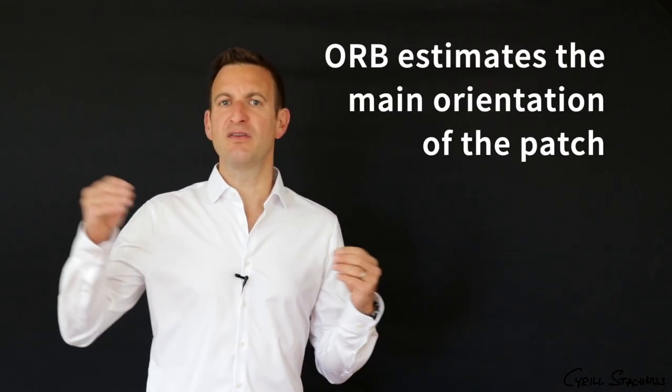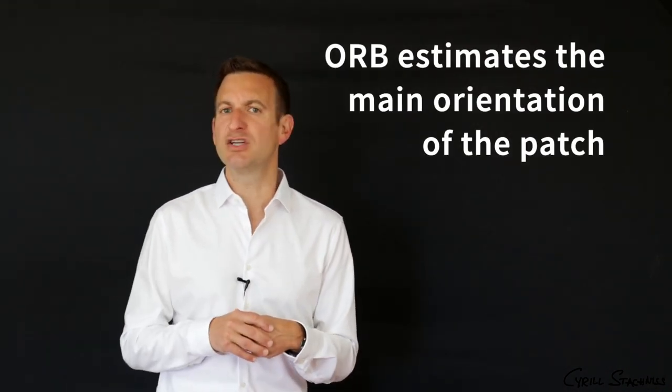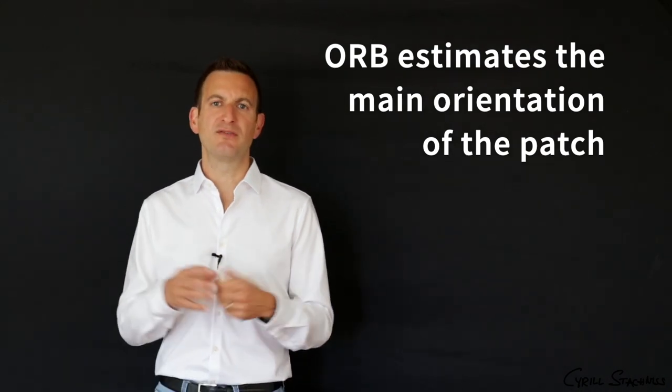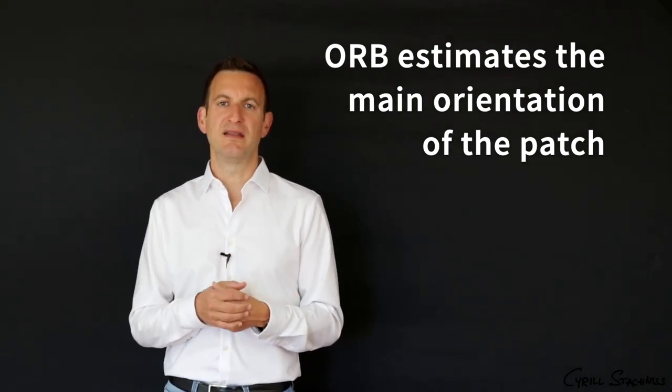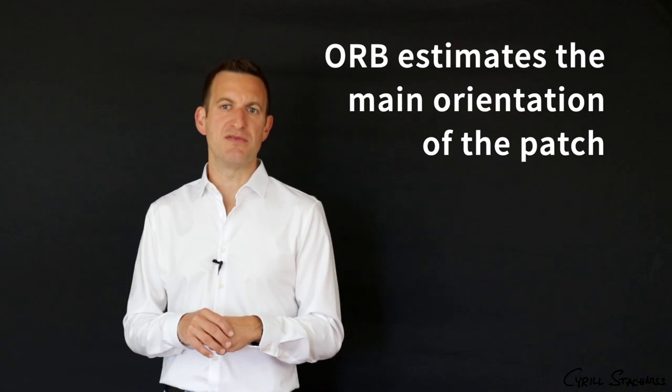And ORB does this by just estimating the main orientation within that local image patch, based on the grayscale values, and then perform the rotation of those sample points. And that's a very easy and very powerful way to compute signatures. So in sum, ORB is an alternative to SIFT and SURF, which is very popular and has been used in several visual SLAM algorithms successfully.